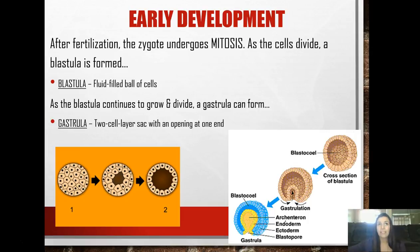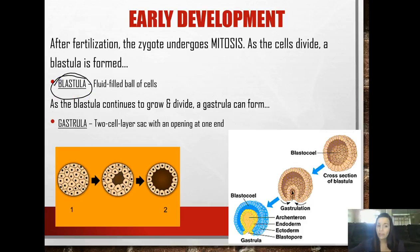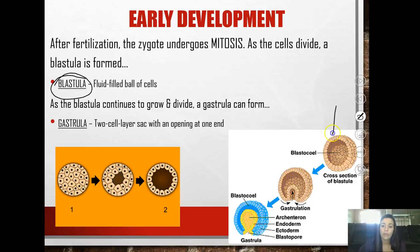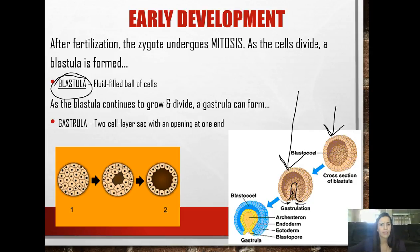After fertilization, the zygote goes through mitosis, keeps dividing and getting bigger, and something called a blastula is formed. The blastula is simply a fluid-filled ball of cells. As it grows and divides, it eventually forms a gastrula - a two-cell layer sac that has an opening at one end. We'll talk about what that opening becomes in just a minute.